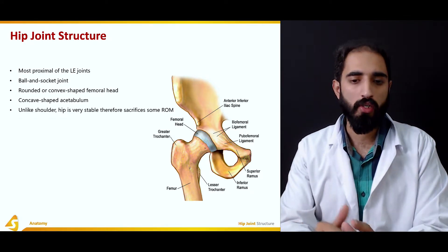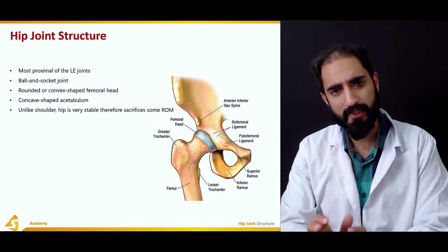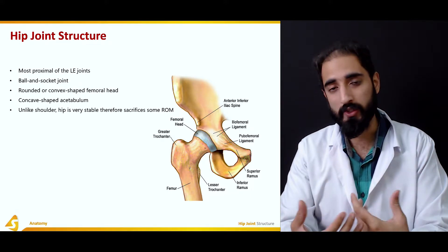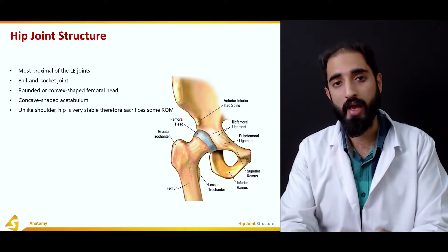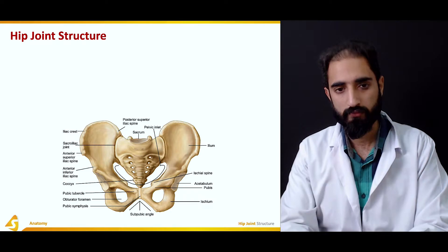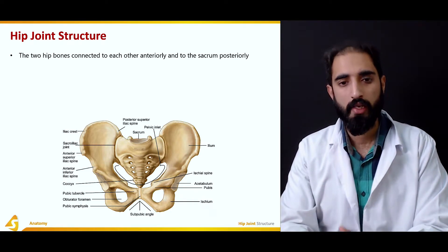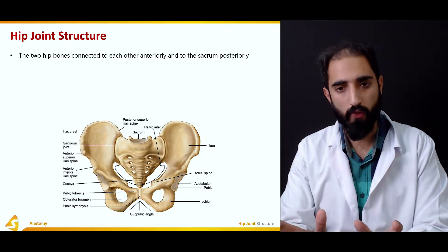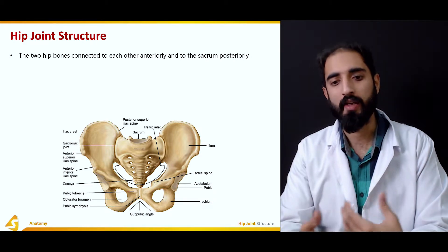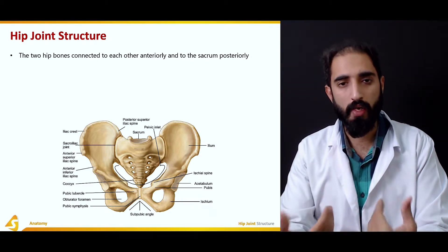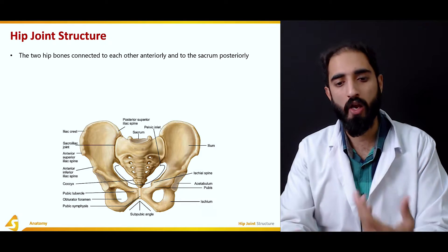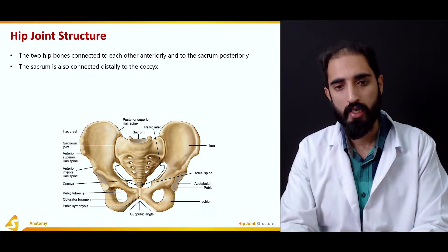Unlike the shoulder, the hip is very stable and therefore it sacrifices a little bit of its range of motion, but as it is a ball-and-socket joint it is still a very highly mobile joint, exhibiting freedom of movement in all three axes and planes. There are two innominate bones which are connected anteriorly at the symphysis pubis, and connected posteriorly to the sacrum via the sacroiliac joint. That sacrum is also connected with the coccyx, also known as the tailbone.